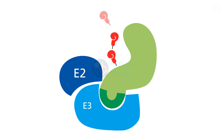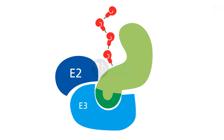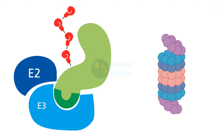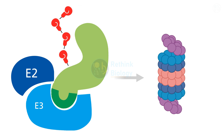The length and structure of the polyubiquitin chain determines the fate of the target protein. For example, a chain of four or more ubiquitins signals the target protein for degradation by the proteasome, a large protein complex that breaks down unwanted proteins.